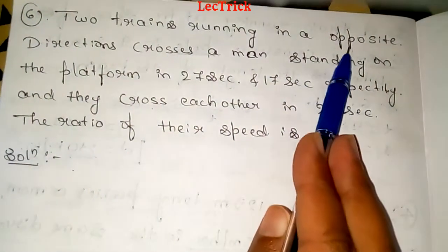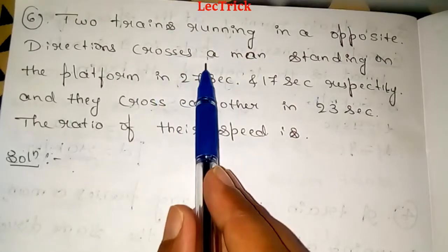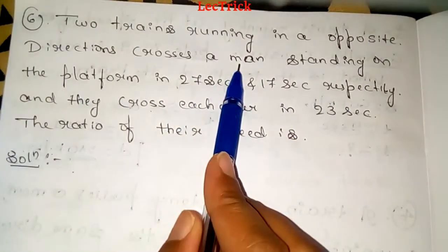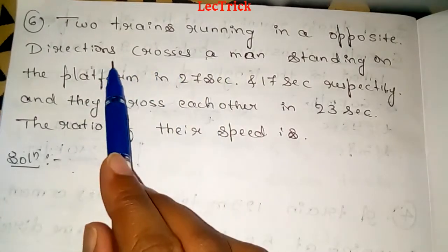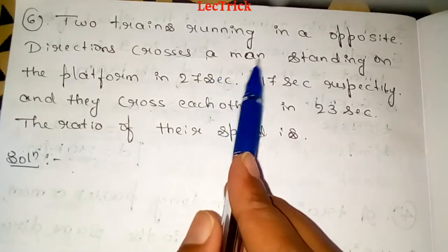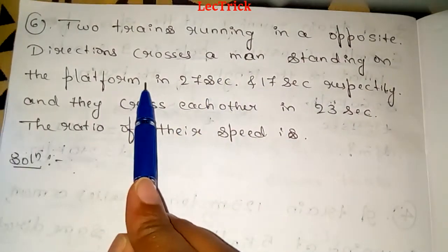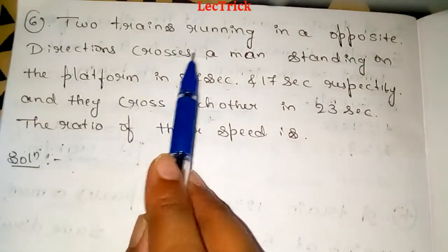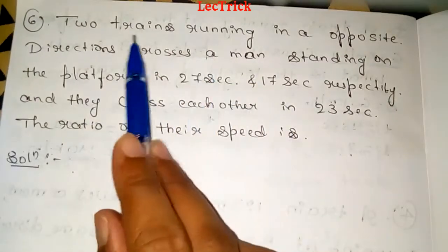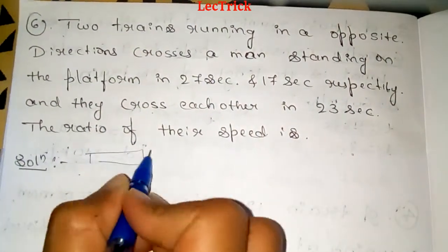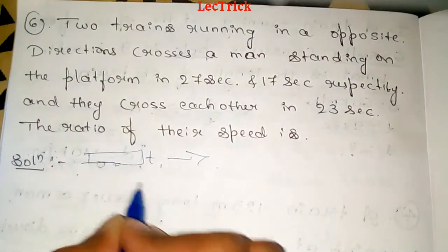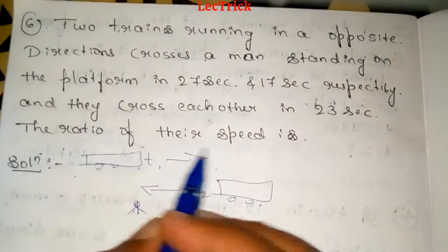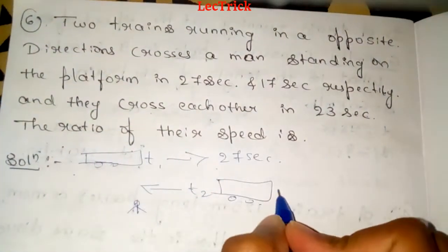The two trains are running in opposite directions. The first train t1 crosses the man in 27 seconds, and the second train t2 crosses the man in 17 seconds.